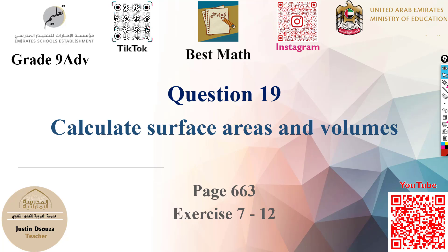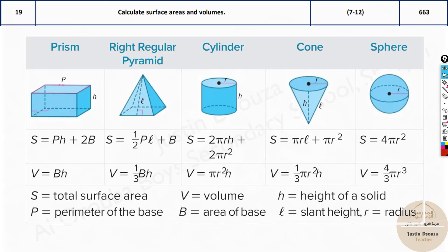Question 19 is to calculate surface areas and volumes. For this question, you need to know the formulas of surface areas and volume for different shapes. A few important things: perimeter of the base is P, S is the total surface area, B is the volume, B is the base area, H is the height of the solid, L is slant height, and R is radius.